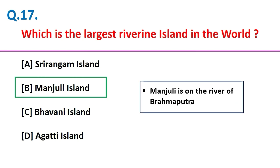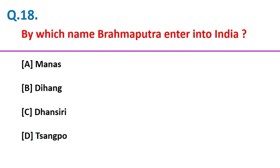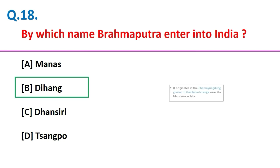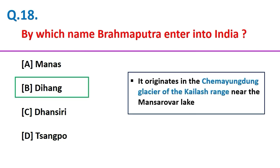Majuli is on the river Brahmaputra. By which name does Brahmaputra enter into India? Dihang. It originates in the Chemayungdung glacier of the Kailas Range near Mansarovar Lake.